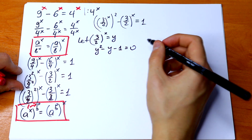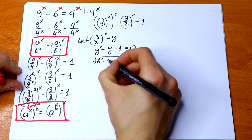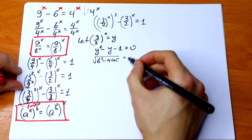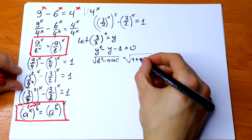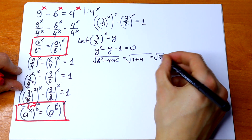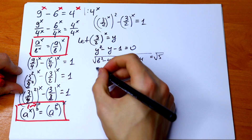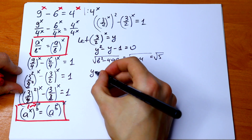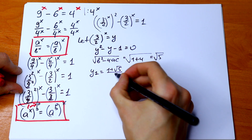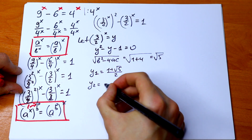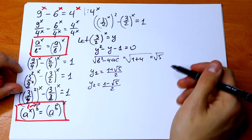Let's solve this. I'll calculate the discriminant: b squared minus 4ac equals 1 plus 4, which gives a square root of 5. Finding our roots: y₁ equals (1 plus square root of 5) all over 2, and y₂ equals (1 minus square root of 5) all over 2. So we have two roots.